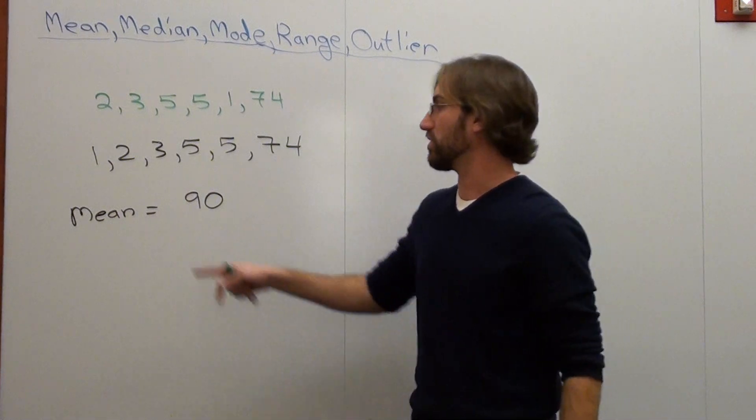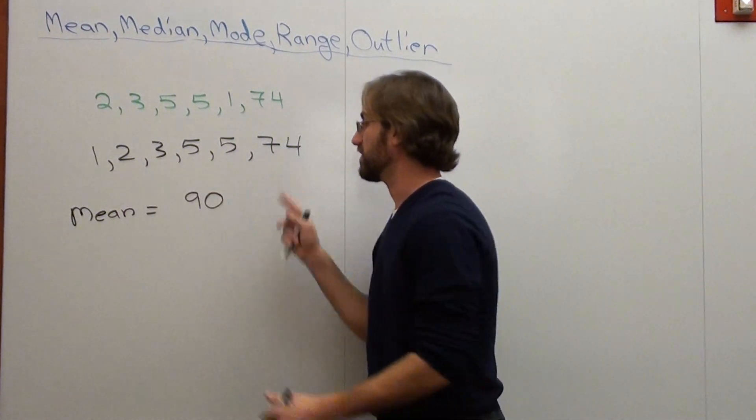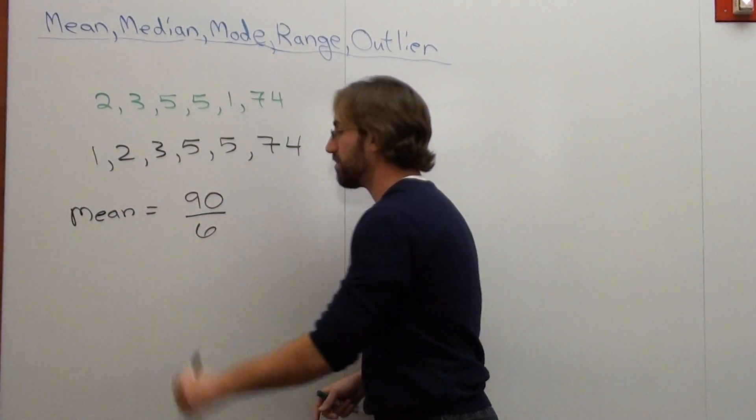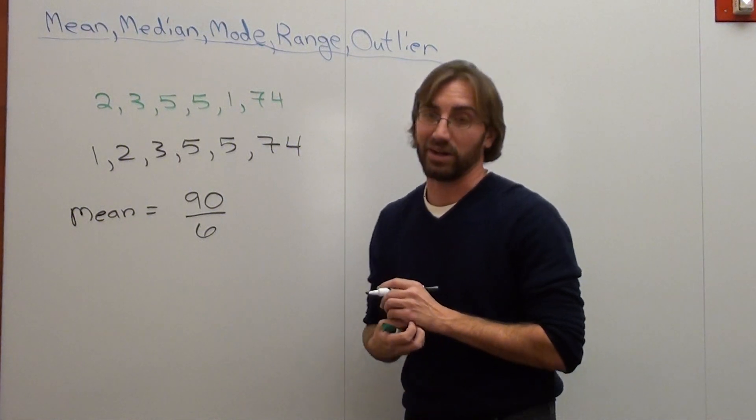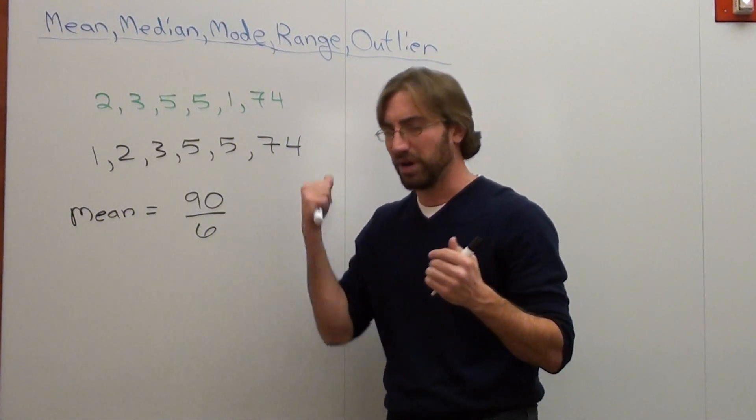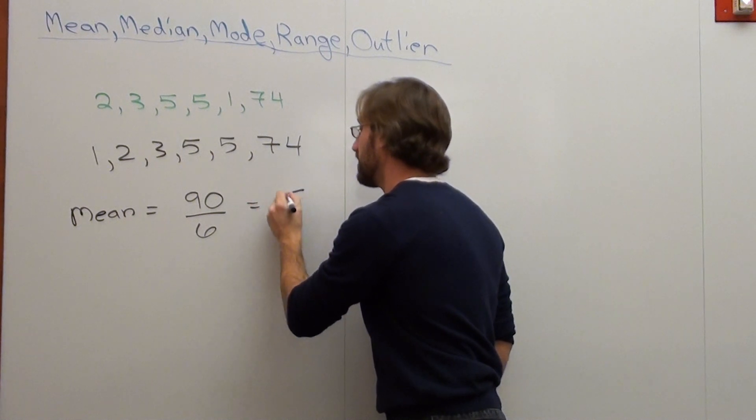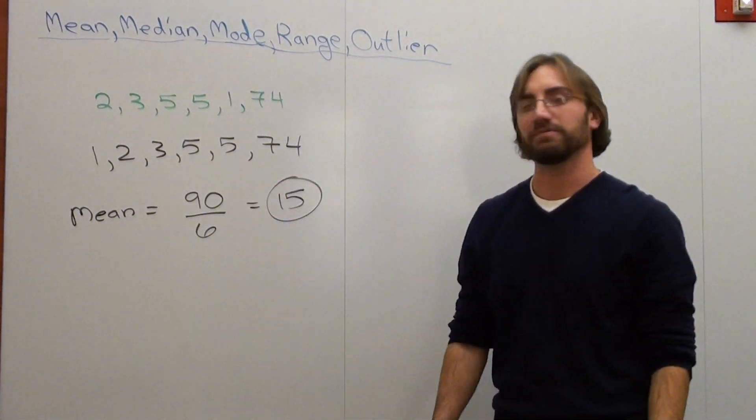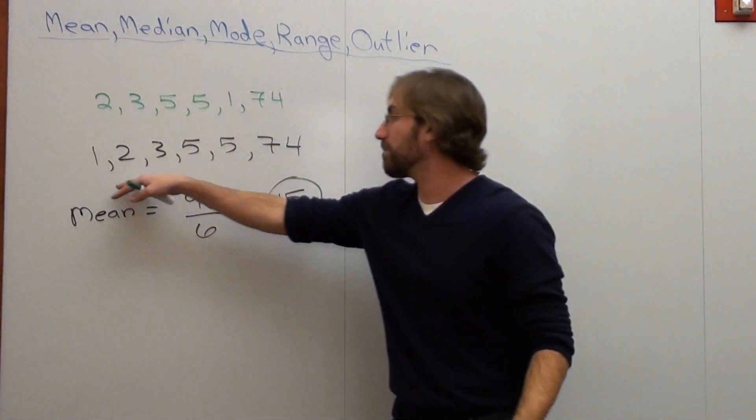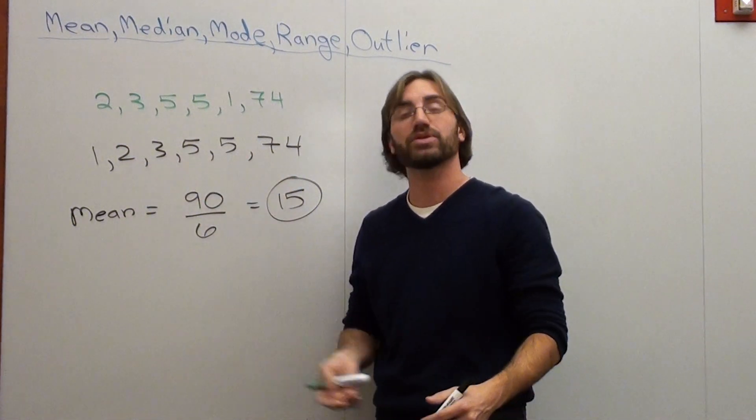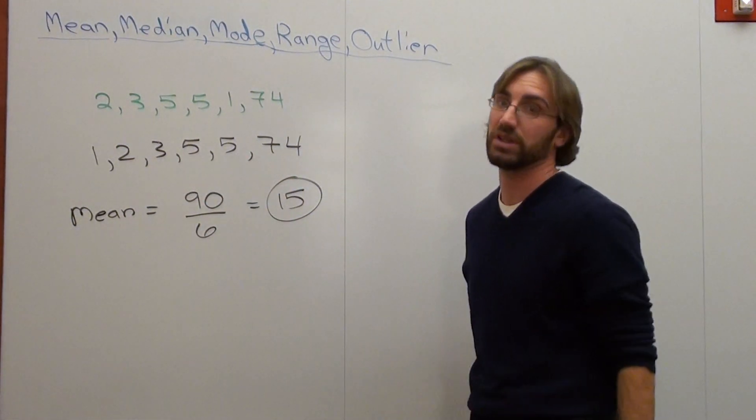And you divide by how many numbers there are. 1, 2, 3, 4, 5, 6. So it's 90 divided by 6, and I don't have a calculator with me, 15, 30, 45, 60, 70, but it's 15. Yes. So your mean is 15. That's all you do. You add everything together, and you divide by how many numbers there are, and that's your mean. That's all there really is to it.